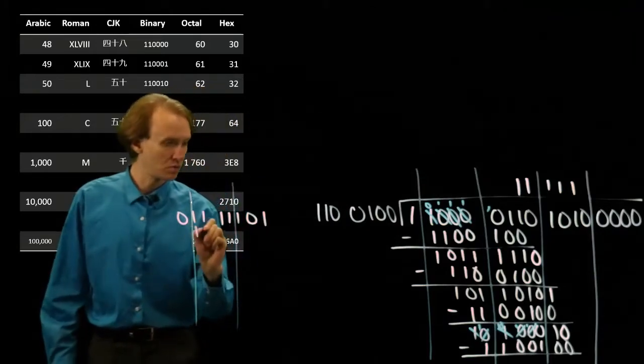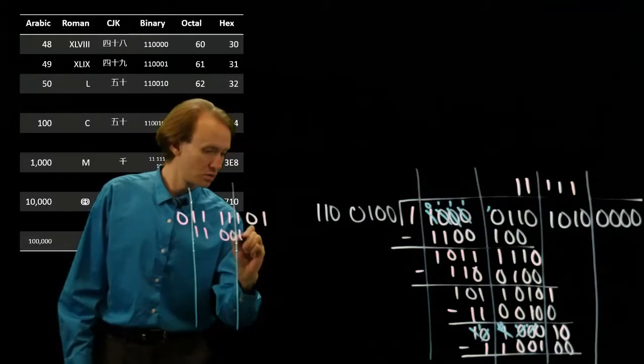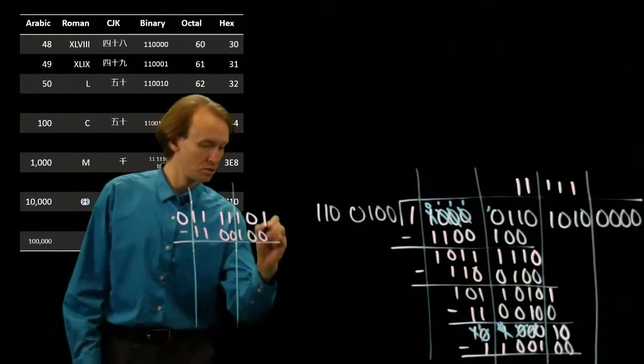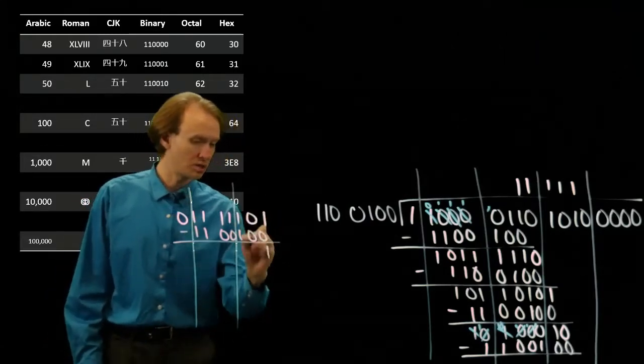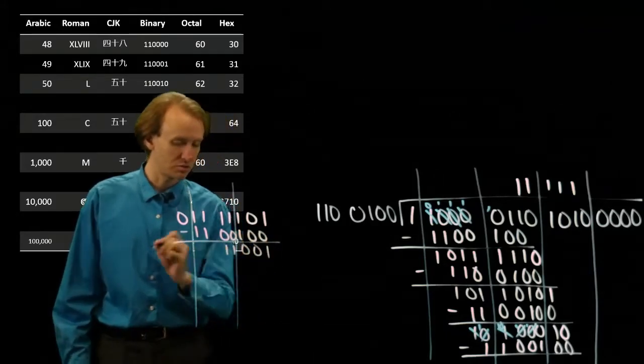I'll have 1 minus 0 is 1. 0, 0, 1, 1, 0, 0.